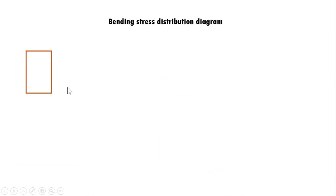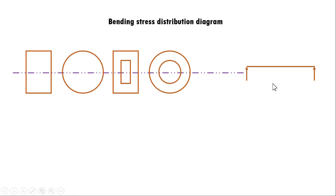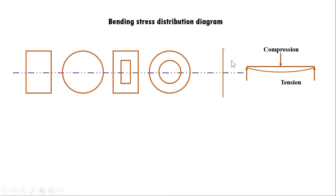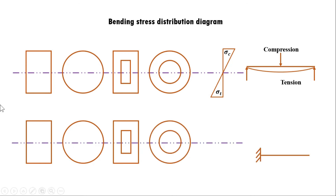Now, consider bending stress distribution. For sections including rectangle, circle, hollow rectangle, and hollow circle with a simply supported beam under load: the beam deflects, the neutral axis represents zero bending stress, the upper part is in compression, and the lower part is in tension. The stress distribution diagram shows σ_c and σ_t opposite in direction.